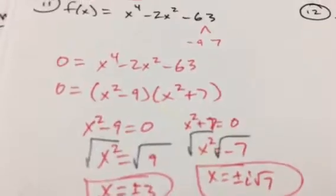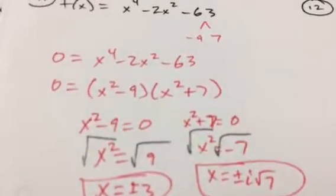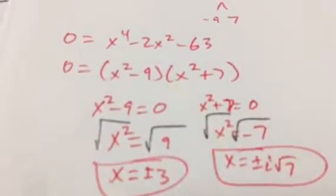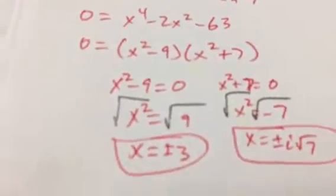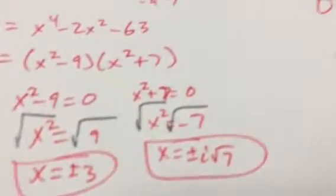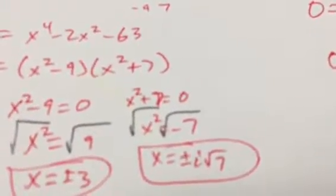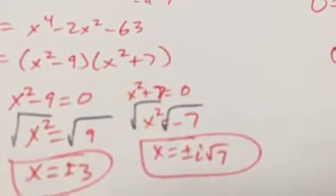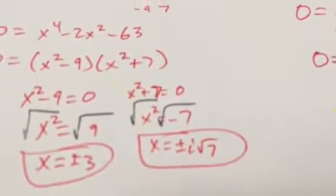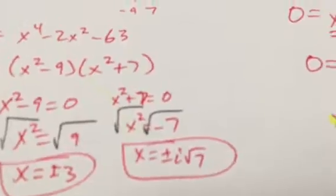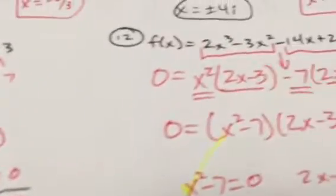That factors to (x² - 9)(x² + 7). For x² - 9 = 0, move the 9 over. When you take the square root of 9, you get ±3. For x² + 7 = 0, x² = -7. Taking the square root of a negative gives i, so x = ±i√7.